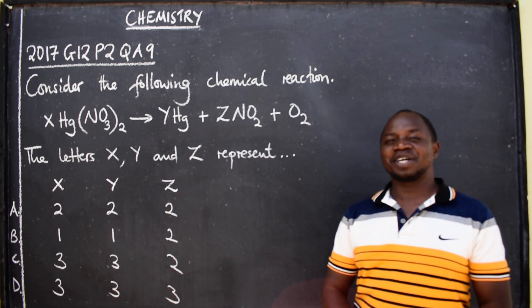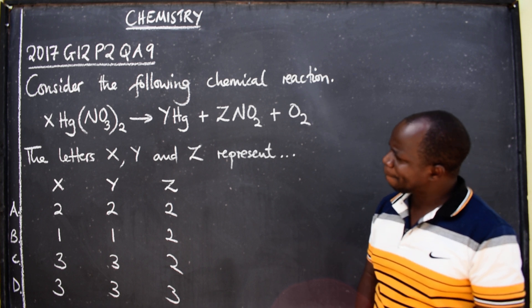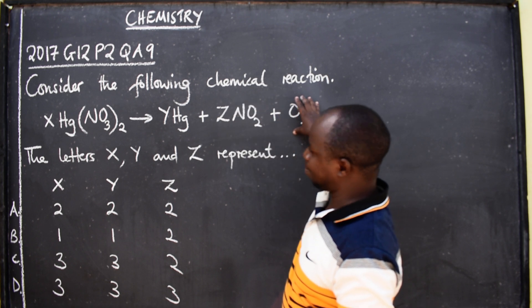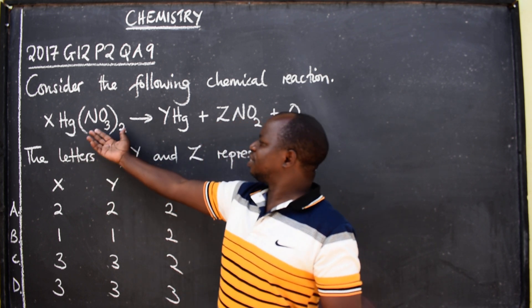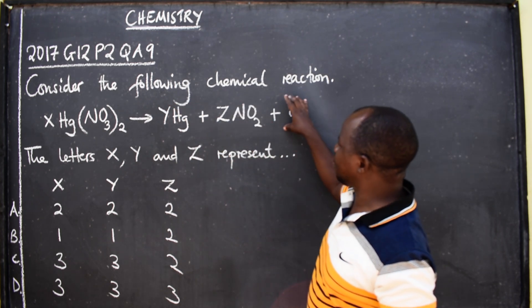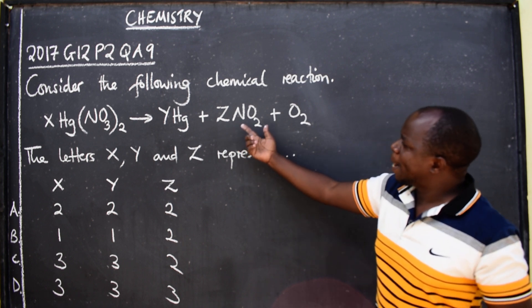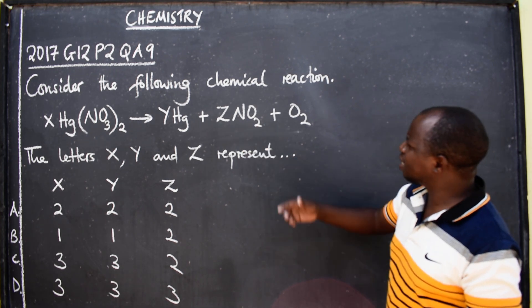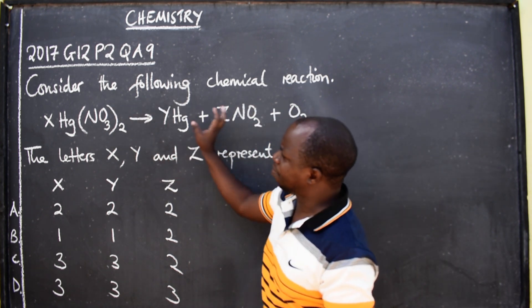This is from chemical formulae and equations. We have mercury nitrate being decomposed to form three products: mercury, nitrogen dioxide, and oxygen gas. That is what has been produced from this chemical equation.